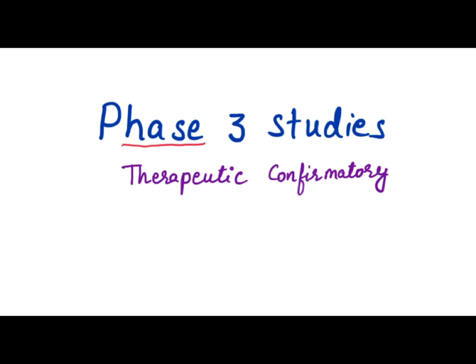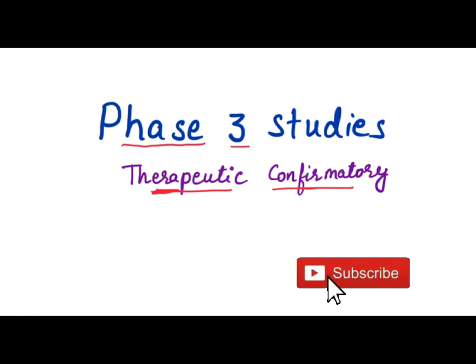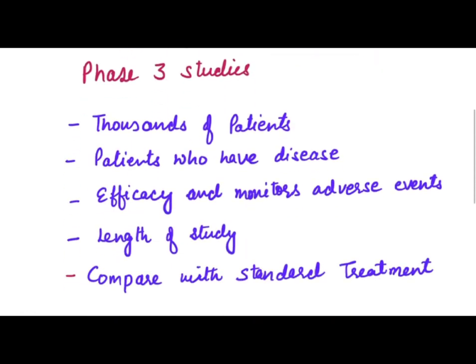We will learn about phase three studies. We already covered the basics — phase one, phase two, phase three studies. Phase three studies are also known as therapeutic confirmatory. In phase one, studies are done for safety, just to check if the product is really safe. Phase two is exploratory, where you explore a little more but on a smaller population. Now you have to confirm that this drug really has therapeutic value and is showing effects — that's why this is known as therapeutic confirmatory.